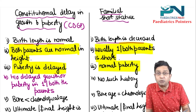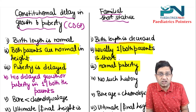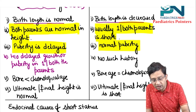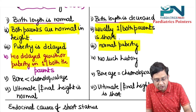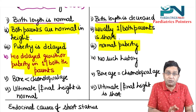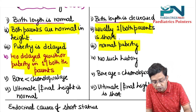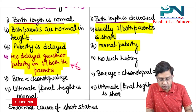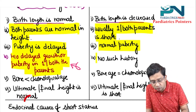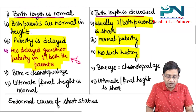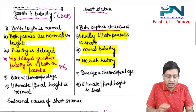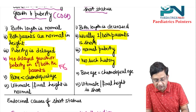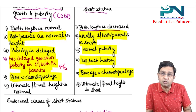In CDGP, puberty is delayed, but in Familial Short Stature there is normal puberty. To diagnose CDGP, family history is important — you should get a history of delayed growth or puberty in one or both parents. That is a very important clue to look for in MCQs. In Familial Short Stature, no such history is seen. Regarding bone age vs. chronological age: in CDGP, bone age is less than chronological age, but in Familial Short Stature, bone age equals chronological age.